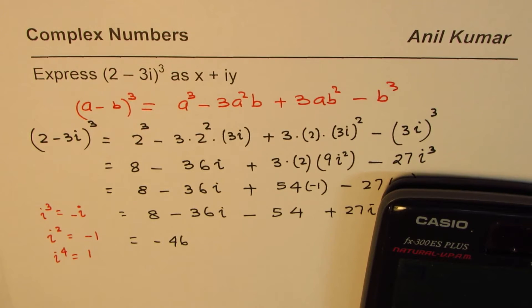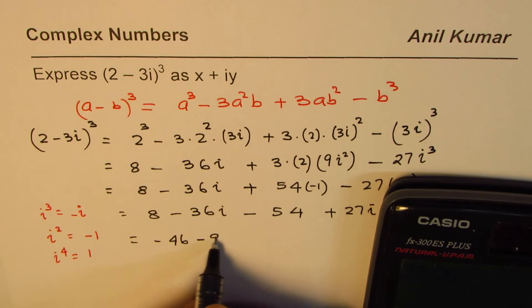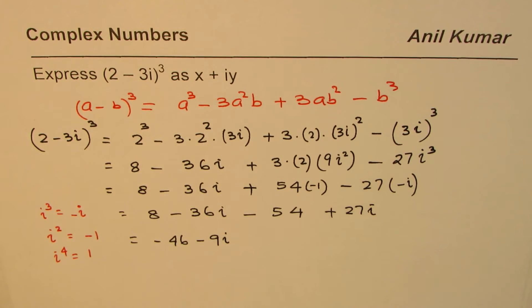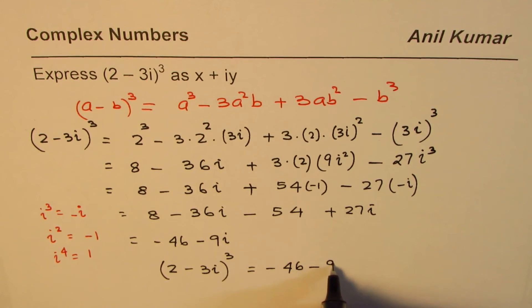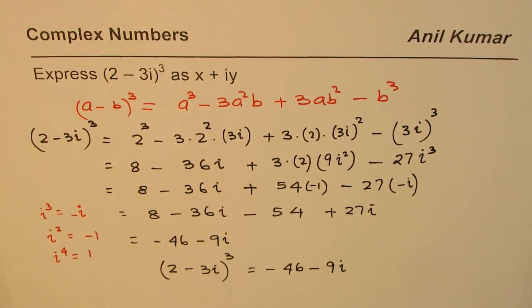This equals -9, so -46 - 9i. That becomes the answer for this question. So (2 - 3i)³ can be written as -46 - 9i in simpler form as a complex number. I hope that helps, thank you and all the best.